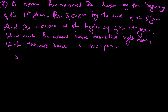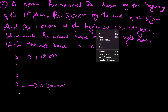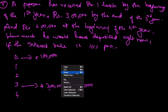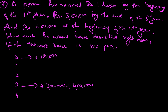The person has received one lakh by the beginning of the first year — that means end of the zero year — one lakh. Then three lakhs by the end of the third year. And four lakhs at the beginning of the fourth year, which is also end of the third year, so that's plus four lakhs. So at end of year three the total is seven lakhs. He deposited some amount X, and because of this he got one lakh now and seven lakhs at the end of the third year.